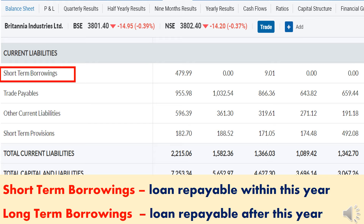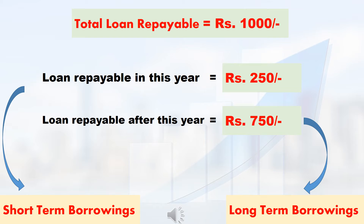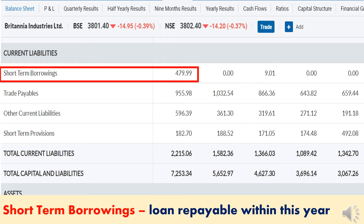Britannia Industries Limited might have taken a loan from the bank. In that loan, how much amount should be repaid in this financial year is called short-term borrowing, and how much should be repaid after this financial year is called long-term borrowing. For example, if Britannia took a loan of ₹1,000, ₹250 to be repaid this year goes under short-term borrowing, and the remaining ₹750 goes under long-term borrowing under non-current liabilities. In 2020, Britannia's short-term borrowing was ₹480 crore, whereas before 2020 it was zero — meaning Britannia took this loan only in 2020, which is a notable point.